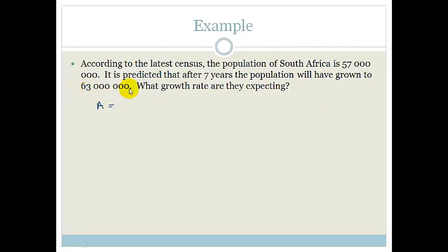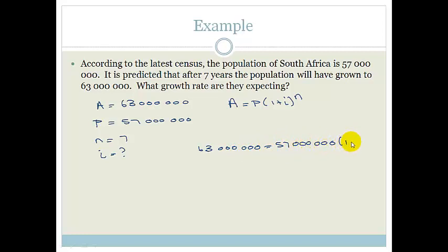So we know that A is the amount we get out entirely. So that is 63 million. At the moment, our population is 57 million. Yeah, that's a lot of people. The number of years that we're looking at is 7 and the I is what they want. They want to know what growth rate we're expecting. So let's look at our formula. A is equal to P times 1 plus I all to the power of N. So that is 63 million equals 57 million times 1 plus I all to the power of 7.